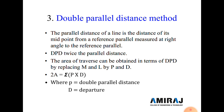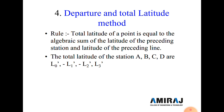The third method is the Double Parallel Distance (DPD) method. The parallel distance of a line is the distance of its midpoint from the reference parallel, measured at right angles to it. DPD is twice the parallel distance. The area of traverse can be obtained by replacing M and L with P and D: 2A = Σ(P·D), where P is the double parallel distance and D is the departure.